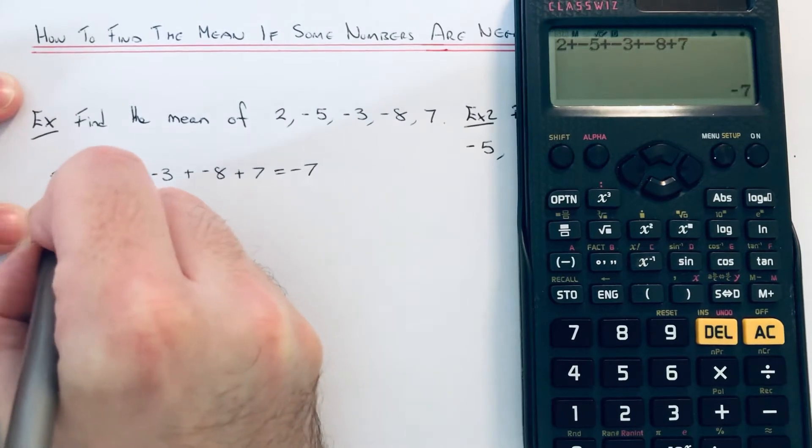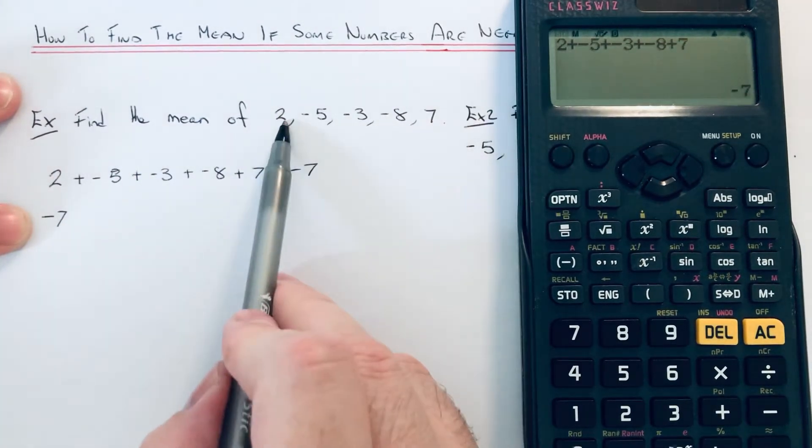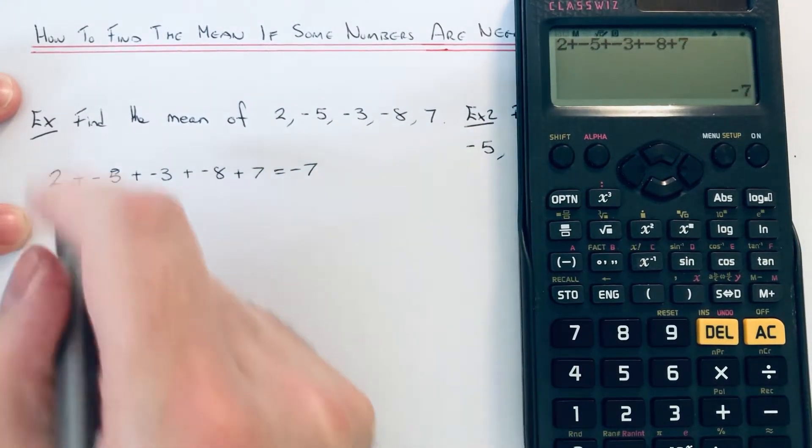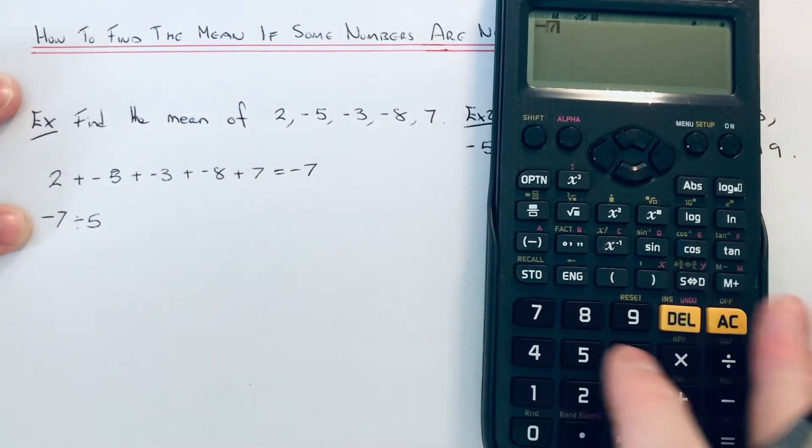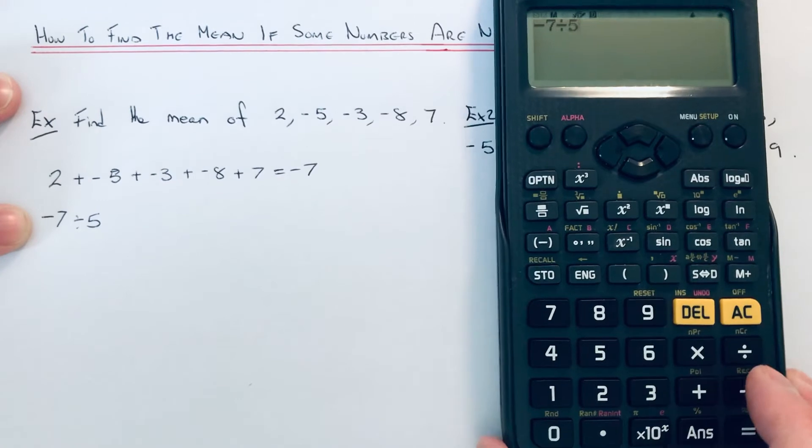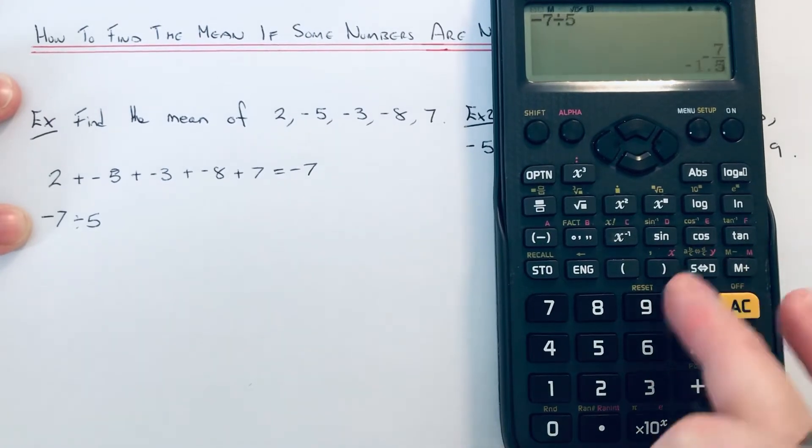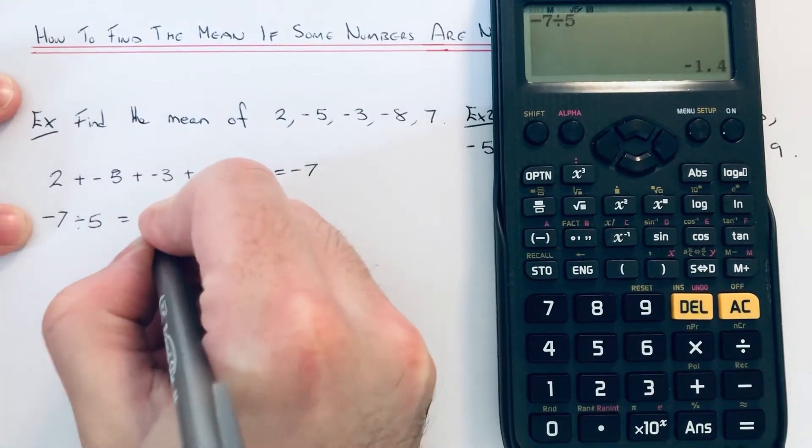Then we just need to divide by how many numbers we've got. So we've got 1, 2, 3, 4, 5. So we do minus 7 divided by 5, which comes out as minus 1.4.